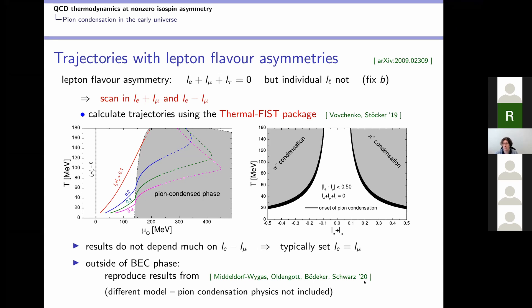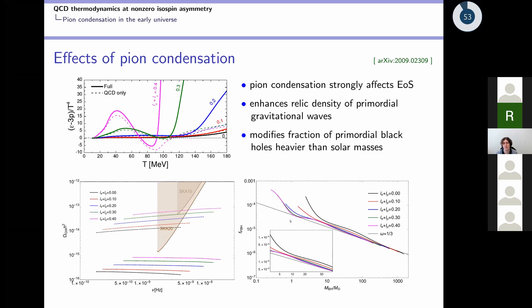Outside the pion condensed phase, we reproduce results from another model which does not have pion condensation built in. Passing through the pion condensation phase will affect the equation of state strongly. Through this equation of state, it will also change other cosmological observables, in particular the relic density of primordial gravitational waves and the fraction of primordial black holes, in particular those heavier than the solar mass. These are model calculations, but fixing the model parameters, one can clearly see a strong effect due to this change of the equation of state. The hope is that at some point this can be pinned down by experiments.